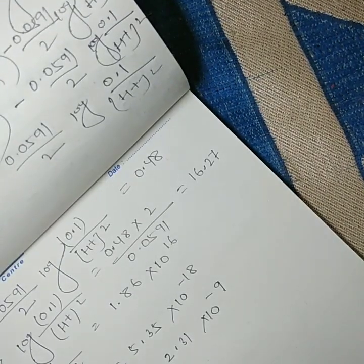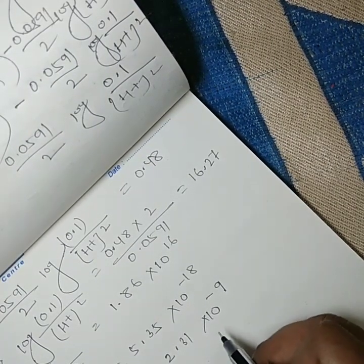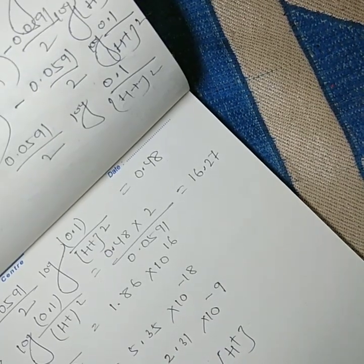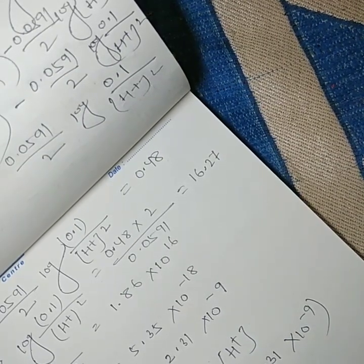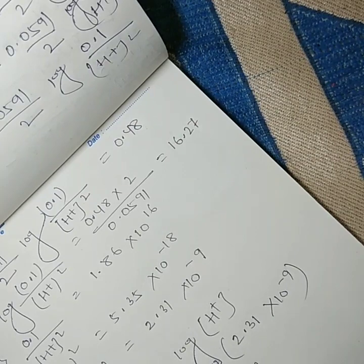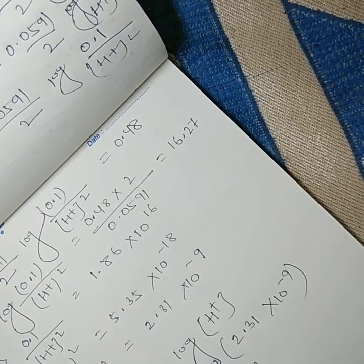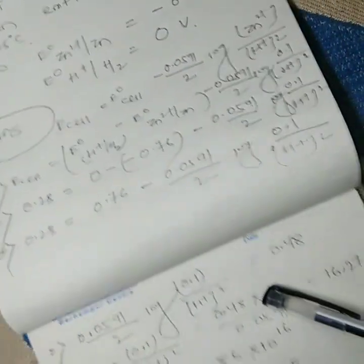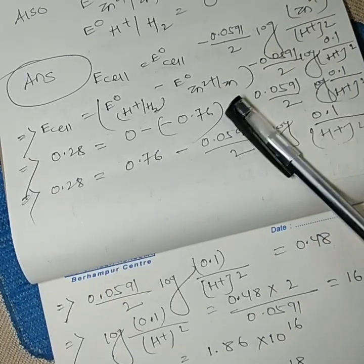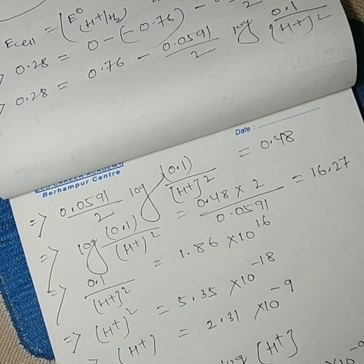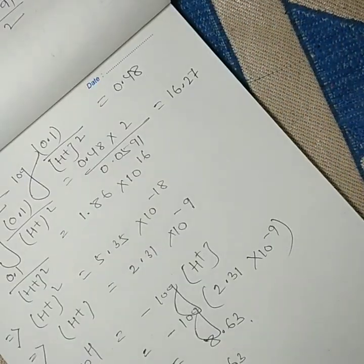Therefore [H⁺] = 2.31 × 10⁻⁹. Using pH = −log[H⁺] = −log(2.31 × 10⁻⁹), the final answer is pH = 8.63. The solution is basic in nature. This is a 3-mark question solved by employing the Nernst equation to find hydrogen ion concentration and then calculating pH.